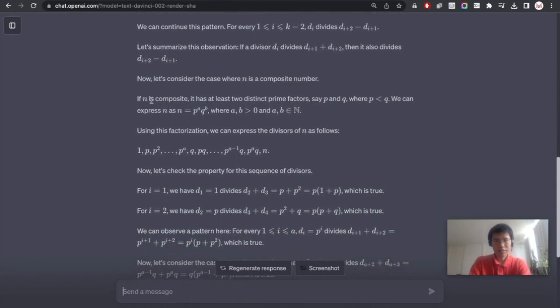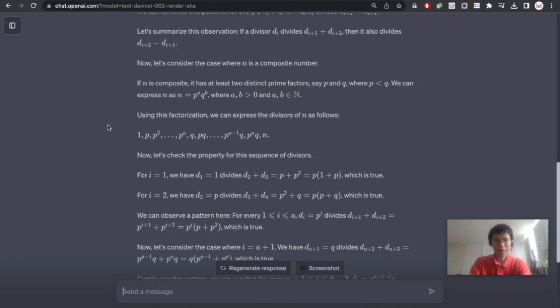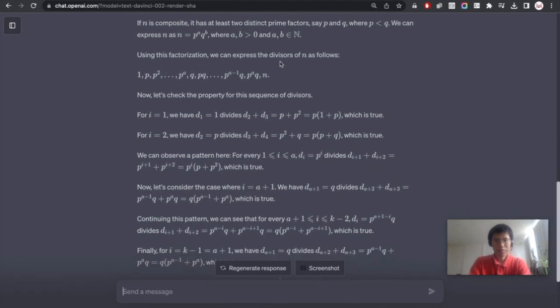And now let's see what it is trying to do. Okay, it's trying to put n as a prime factorization. So if n is composite, it tries to write n into p to the power of a times q to the power of b. And tries to order the divisors as 1, p, p to the square, p to the power of a and q, pq, and so on.